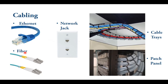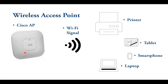The wireless access points — this is an example of a Cisco access point. They provide a Wi-Fi signal and are typically mounted in the ceiling facing down, providing a wireless signal for wireless devices.